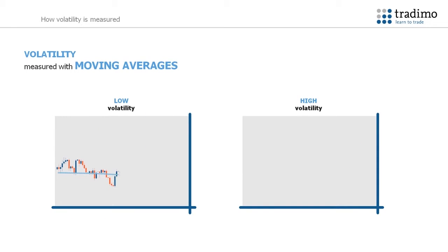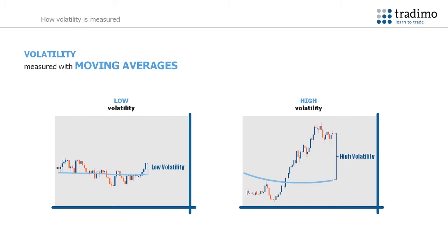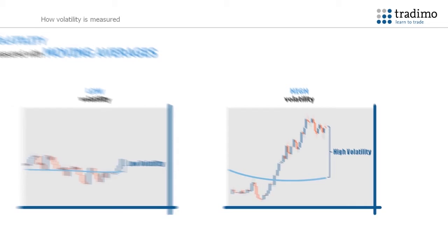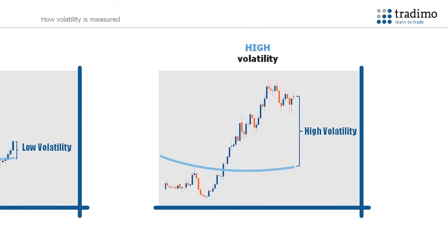Let's first take a look at moving averages. Moving averages are displayed on the actual price chart, and the relation of the moving average to the current price gives an indication of the volatility of the asset. The further the price is from the moving average, the higher the volatility of the asset.